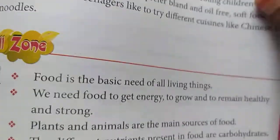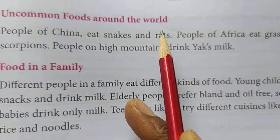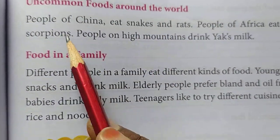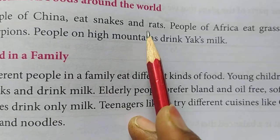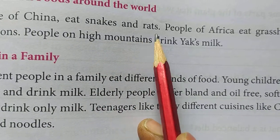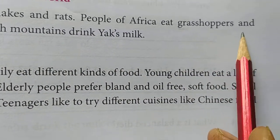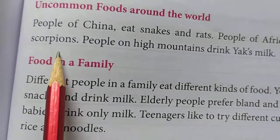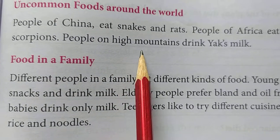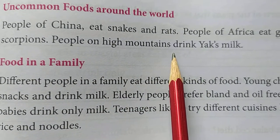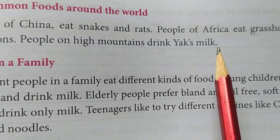Some uncommon foods around the world: people of China eat snakes and rats, people of Africa eat grasshoppers and scorpions, and people on high mountains drink yak's milk.